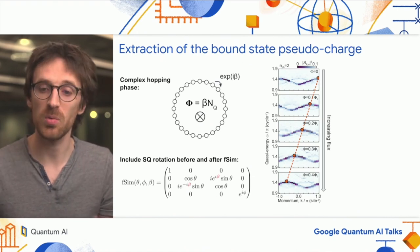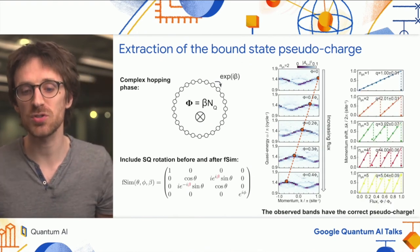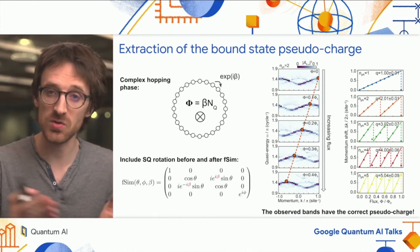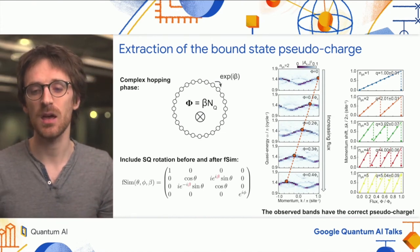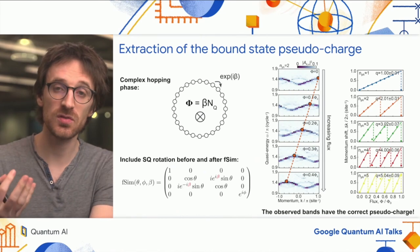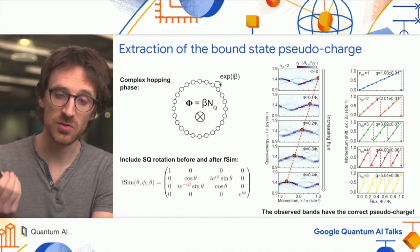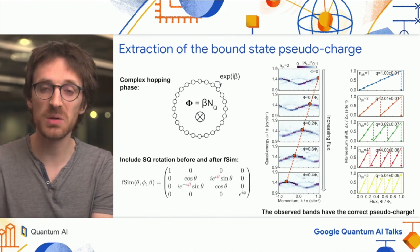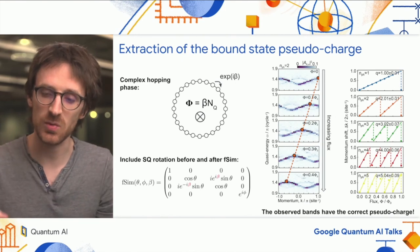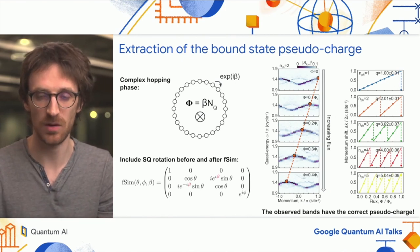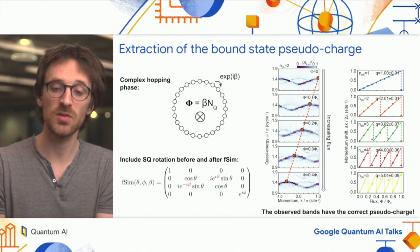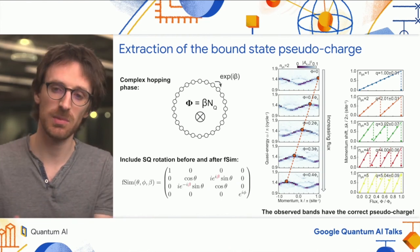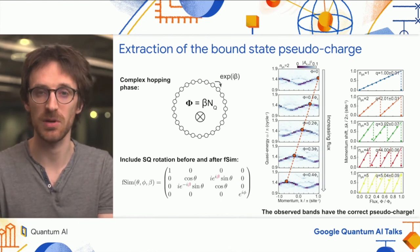We have measured the charge of all the bound states we previously observed, and the charge of each is very close to what we expect: the number of photons inside the bound state. This confirms the prediction made by the analytical results.